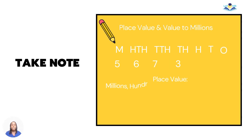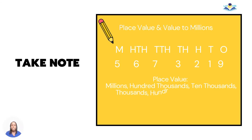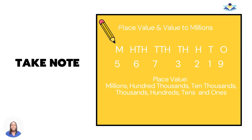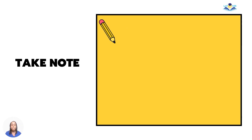If the question asks you to find place value, you're going to write your names — whether it's millions, hundred thousands, ten thousands, thousands, hundreds, tens, or ones.